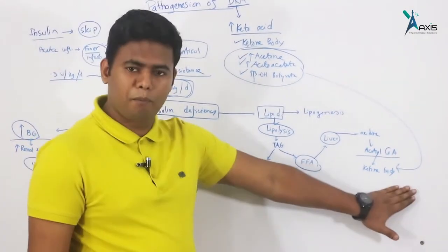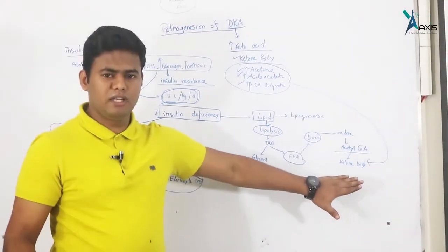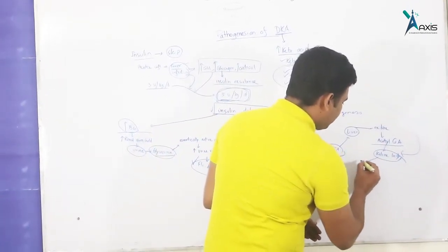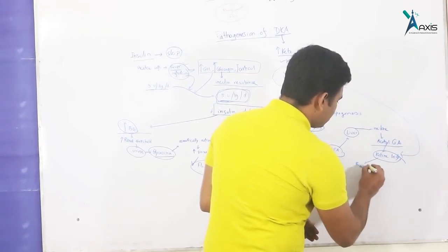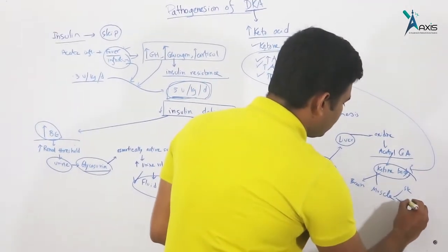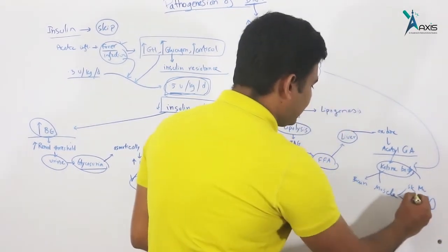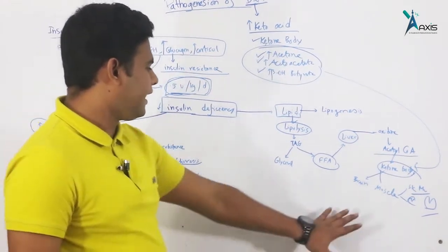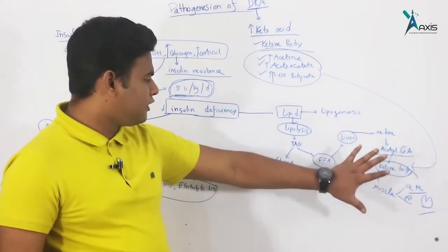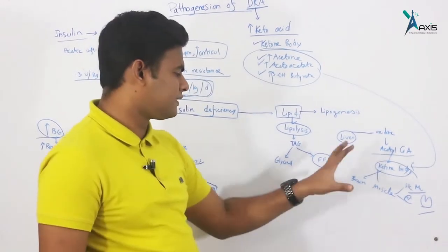When the liver forms ketone bodies, they are released into the blood and distributed to organs: the brain, skeletal muscles, and cardiac muscles. The ketone body supplies energy to these organs. The ketone body is good for supplying energy to support organ function.